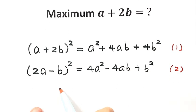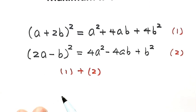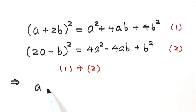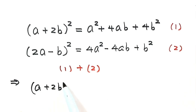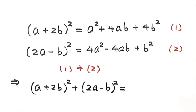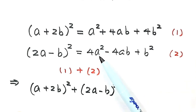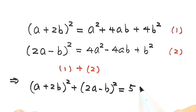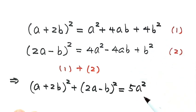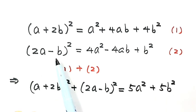Now let's compute Result 1 plus Result 2. Adding the left-hand sides gives (a plus 2b) squared plus (2a minus b) squared. Adding the right-hand sides and combining terms gives 5a squared — the 4ab and minus 4ab cancel — plus 5b squared. Now we see why we did this: a squared and b squared have the same coefficient.